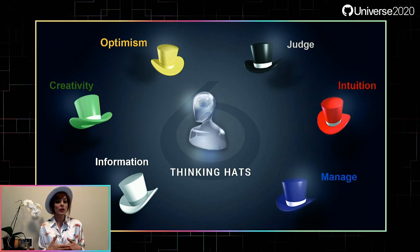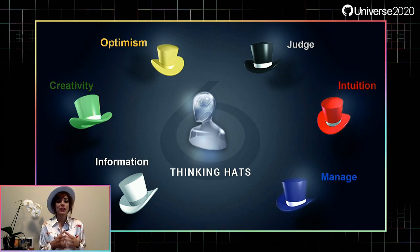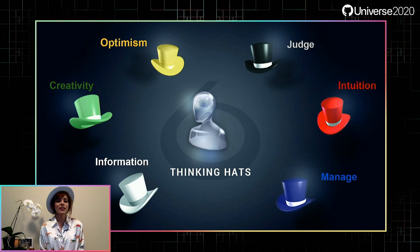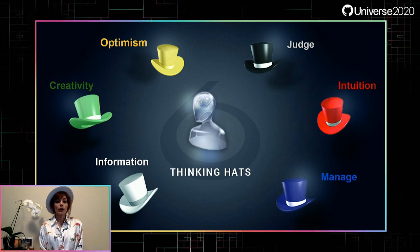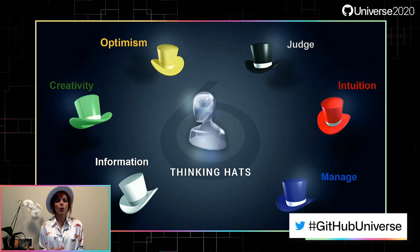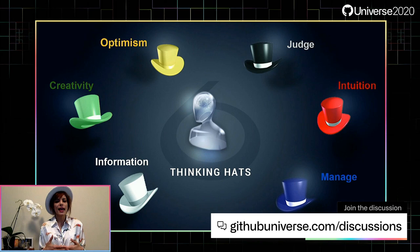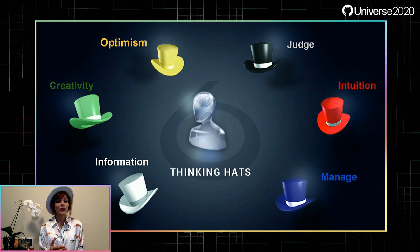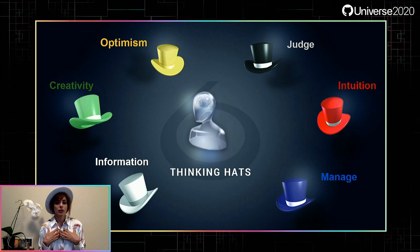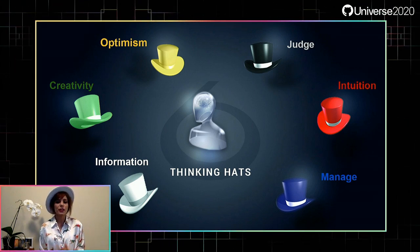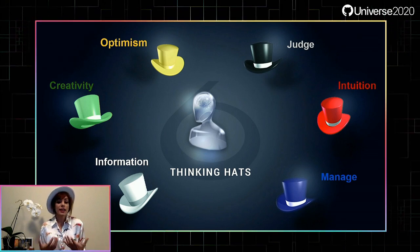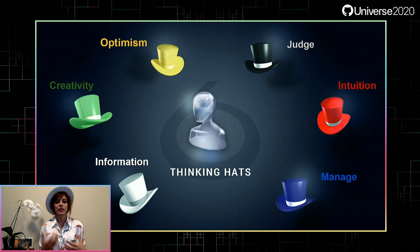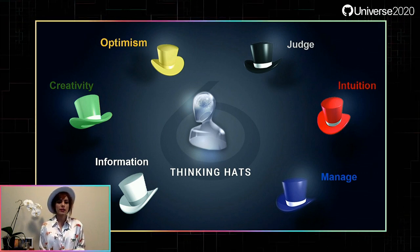The yellow hat symbolizes brightness and optimism — you explore positive ideas, values, and benefits. The black hat is the judge — spotting difficulties and dangers, why something may not work. It is probably the most powerful and useful of the hats. The red hat signifies feelings and intuition — you express emotions, fears, likes, dislikes, loves, and hates. The green hat focuses on creativity, possibilities, alternatives, and new ideas — an opportunity to express new concepts and new perceptions.